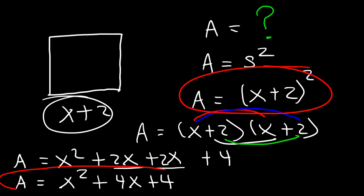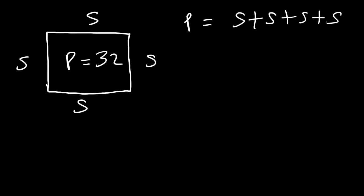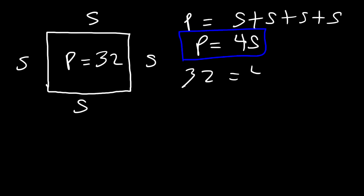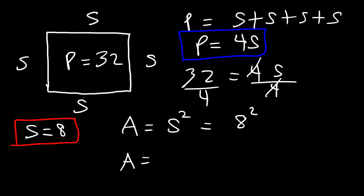Now let's try another example. If we're given the perimeter of a square — say it's 32 units — what is the area? The perimeter is the sum of all four sides: s + s + s + s, which equals 4s. So the side length is 32 divided by 4, which is 8. Now we can calculate the area: s squared, or 8 squared, which is 64 square units.